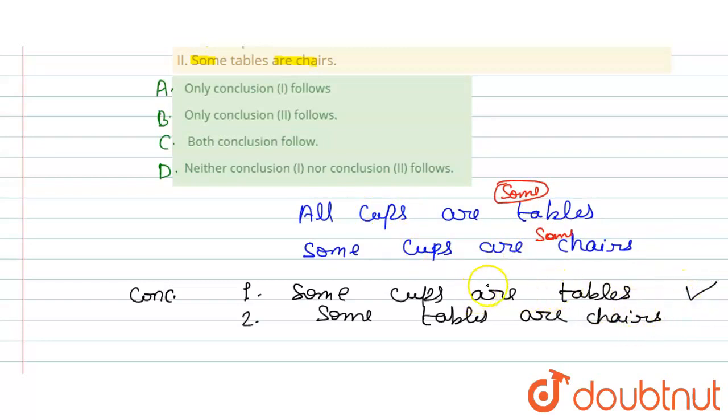Okay, first conclusion follows. And second one is some tables are chairs, table and chair. So, the table in the first statement and chair in the second statement. So, what do we need to do? Common is our word.